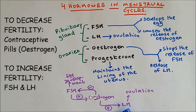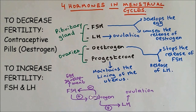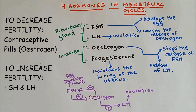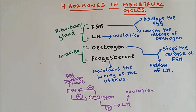FSH and LH will be given to ladies who are trying to get pregnant, because FSH causes egg development and LH causes ovulation. So to increase fertility, FSH and LH hormones are taken, and to reduce fertility, Oestrogen is taken in the contraceptive pill.